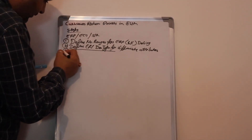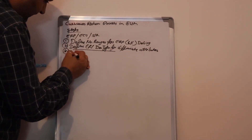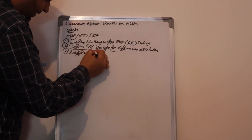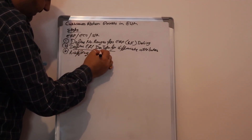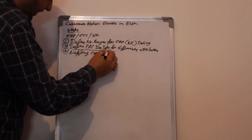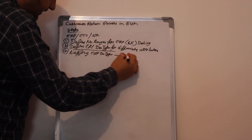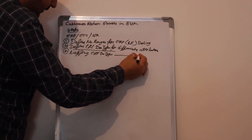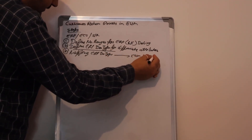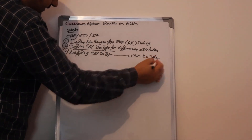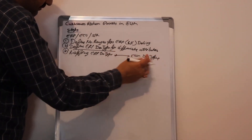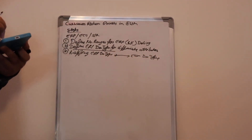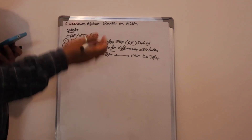Then we need to do mapping — mapping ERP document type with EWM document type. Mapping communication linkage.